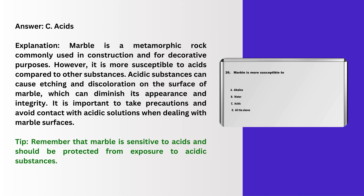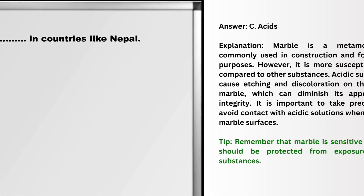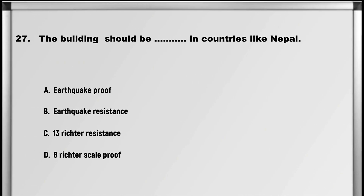Explanation: Marble is a metamorphic rock commonly used in construction and for decorative purposes. However, it is more susceptible to acids compared to other substances. Acidic substances can cause etching and discoloration on the surface of marble, which can diminish its appearance and integrity. It is important to take precautions and avoid contact with acidic solutions when dealing with marble surfaces. Tip: marble is sensitive to acids and should be protected from exposure to acidic substances.